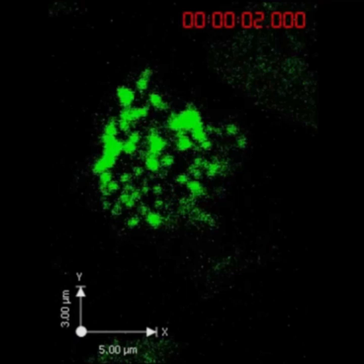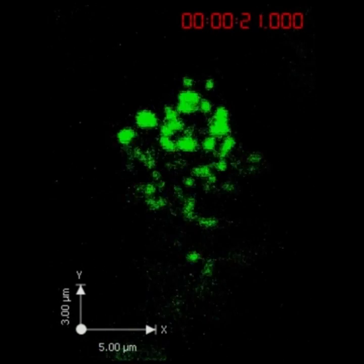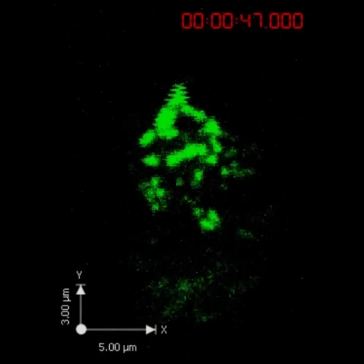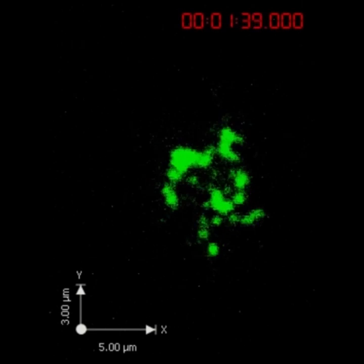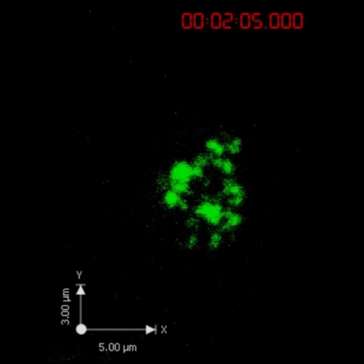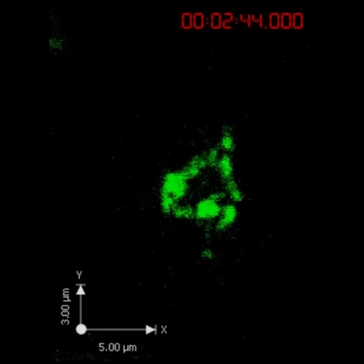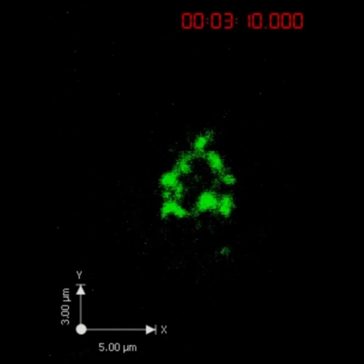If we look at the clip, these clusters then dramatically move around very rapidly and within a few minutes start to move towards the center of that NK cell-diseased cell interface where they form this really distinct and obvious ring structure. This ring structure then remains throughout the contact.